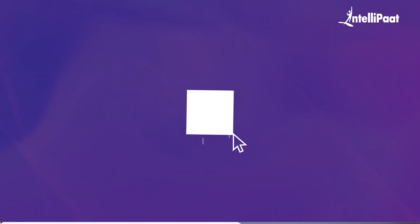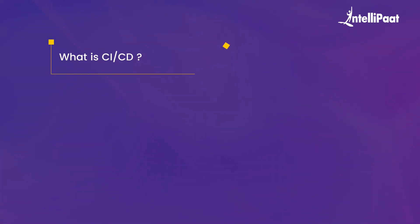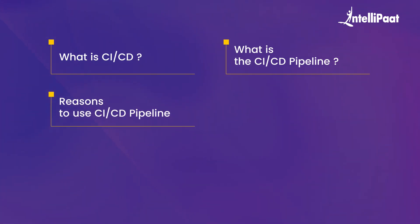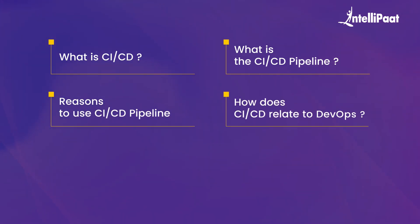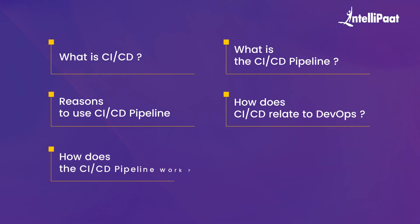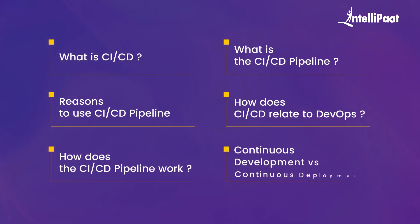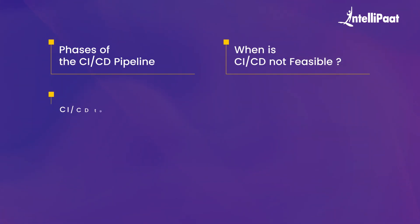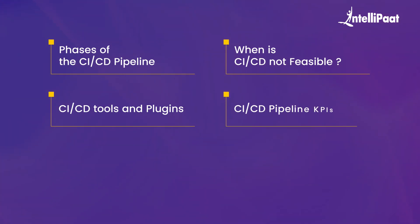Here is the agenda of this video. What is CICD? Then we talk about what is the CICD pipeline, what are the reasons to use the CICD pipeline, and how does CICD relate to DevOps. How does the CICD pipeline work? Then we are going to look into continuous development versus continuous deployment, the phases of the CICD pipeline, when is CICD pipeline not feasible, CICD tools and plugins, and CICD pipeline KPIs.